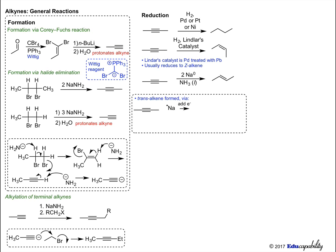Sodium transfers a single electron to the alkyne, forming a radical anion. This anion adopts the more stable conformation, putting the methyl groups on opposite sides of the double bond before it is protonated by ammonia. Sodium donates another electron, forming a new anion, which is again protonated by ammonia.